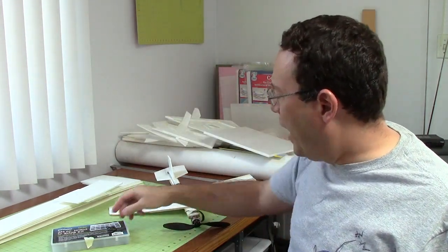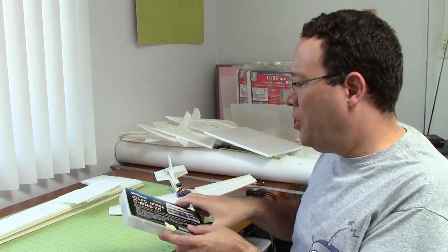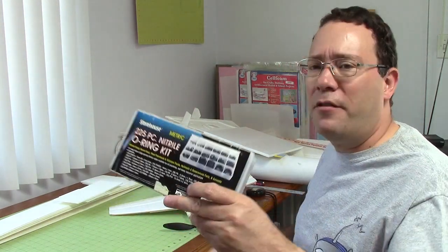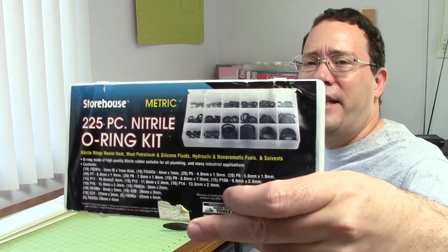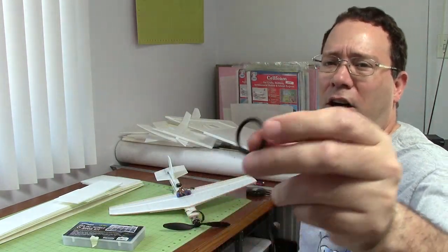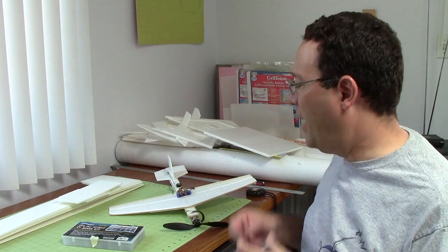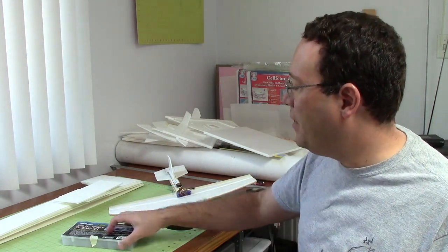Those black prop saver rubber bands, you can go to a place like Harbor Freight and buy something like this, which is just an O-ring kit. You get a ton of different sizes of the black rubber bands, so there's no problem getting them.